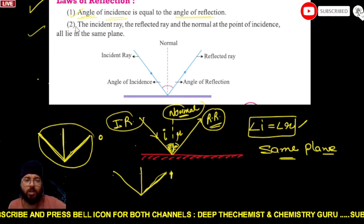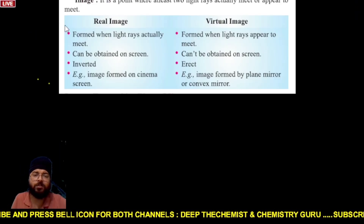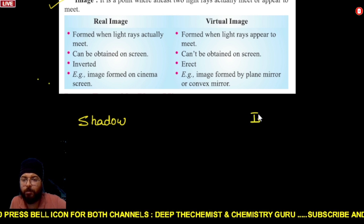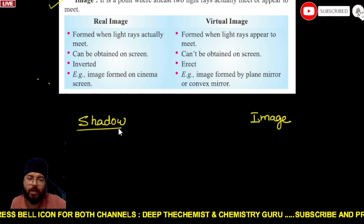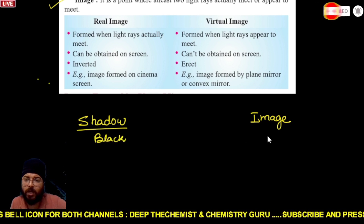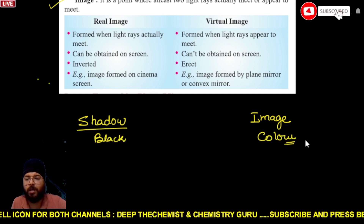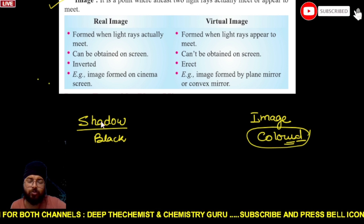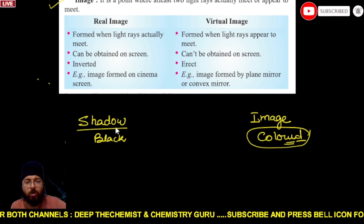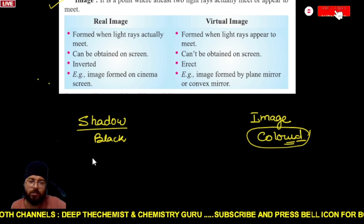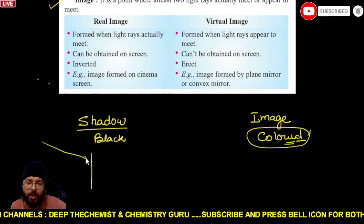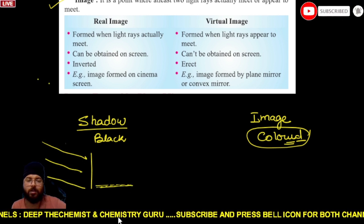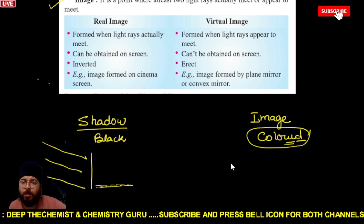The next topic is shadow and image. A shadow is black in color — you have studied this in lower classes. But an image has color. A shadow is formed when light is blocked, and that blocked region forms the black shadow.